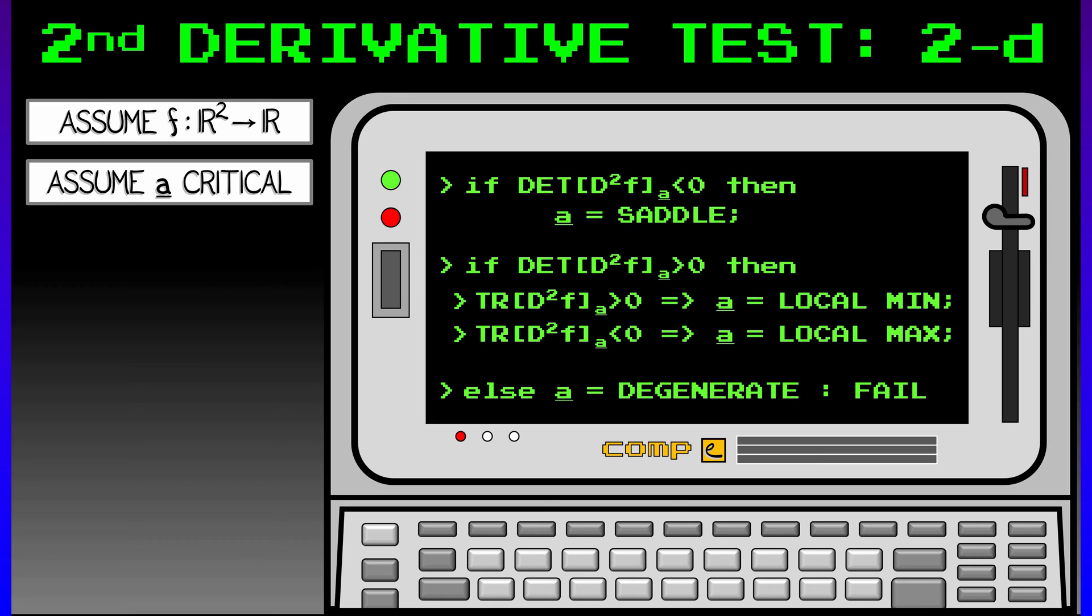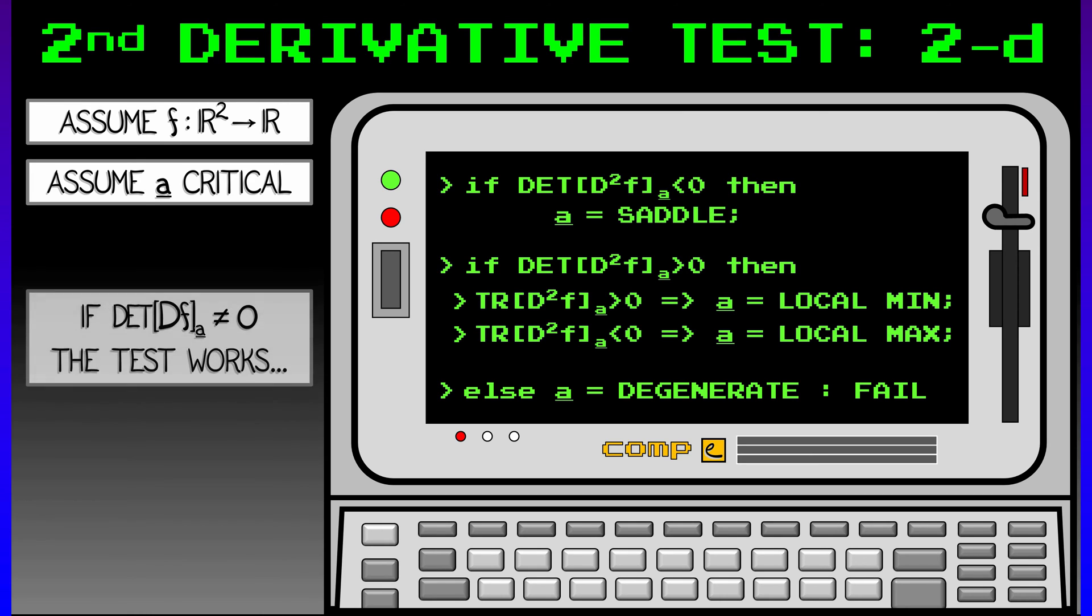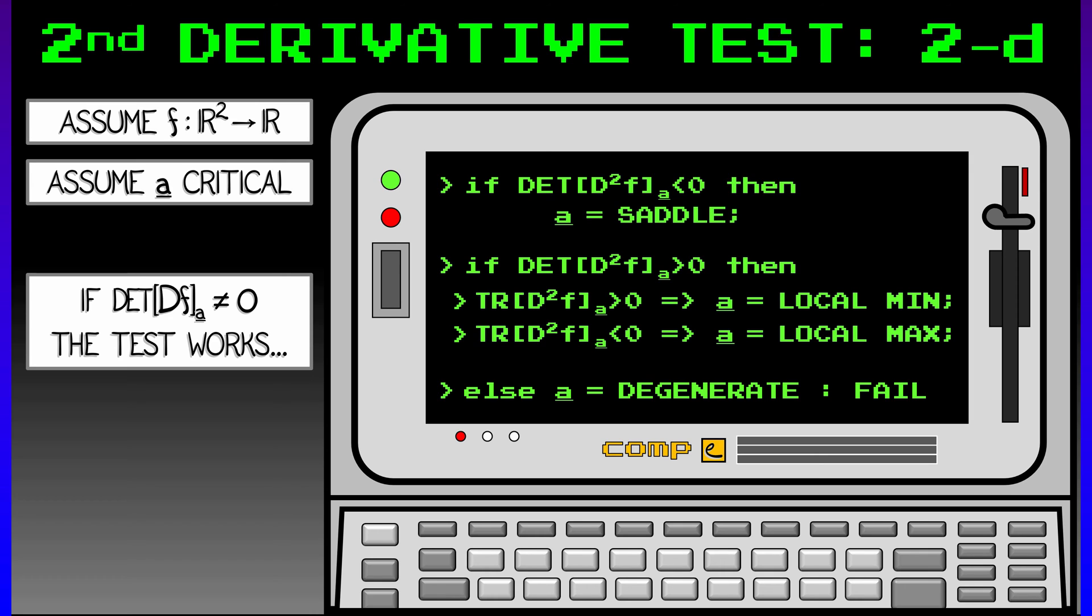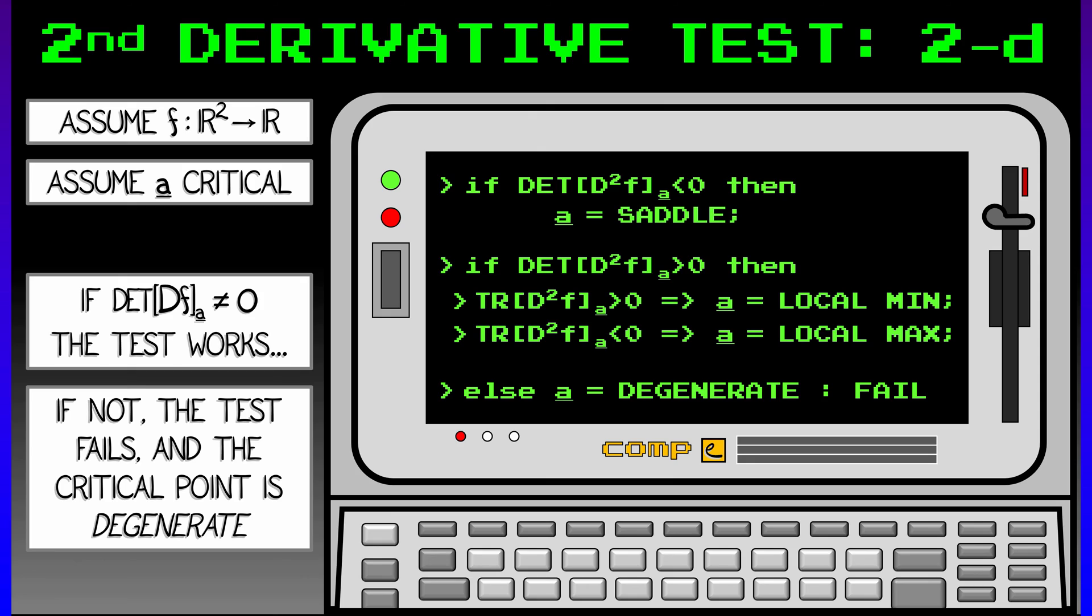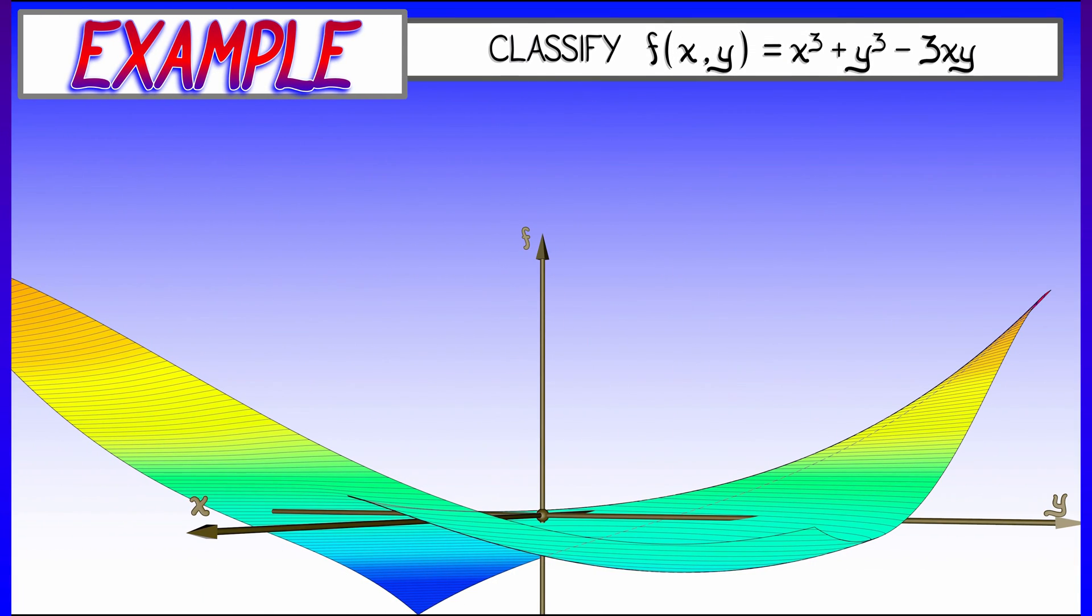If this test fails, if the determinant is equal to zero, then you have a degenerate critical point. Then it's like the second derivative test has failed. This is how the second derivative test works for functions in 2D. If you want to do higher dimensions, you can do it, but you have to learn some more math.